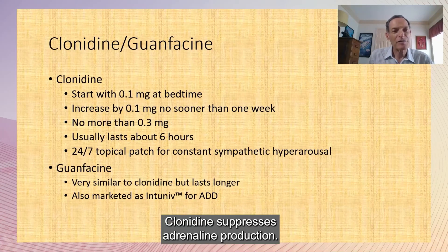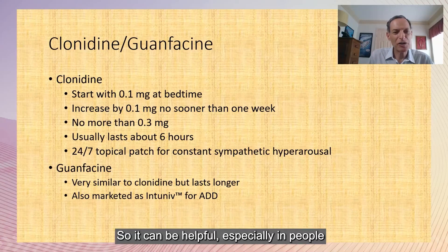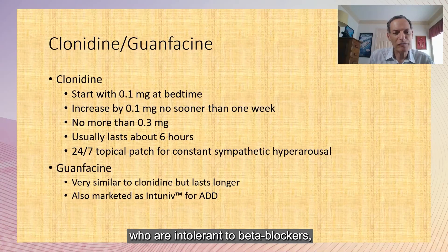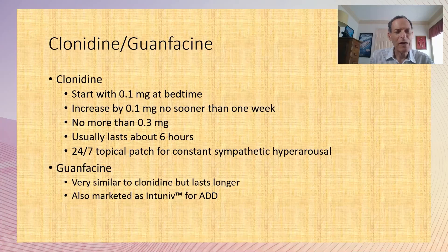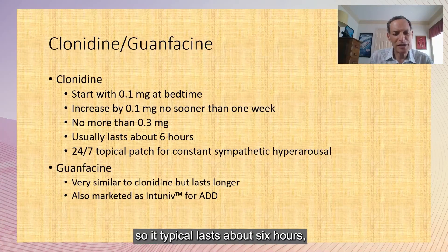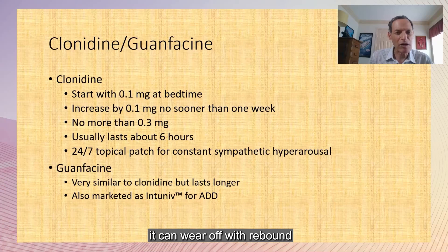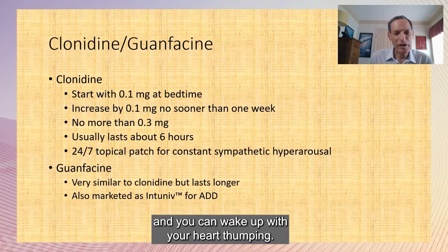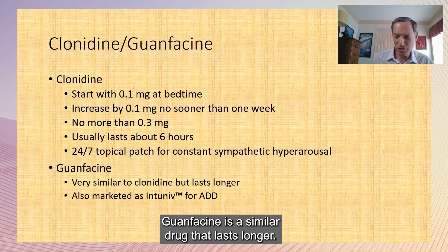Clonidine suppresses adrenaline production and can be helpful, especially in people intolerant to beta blockers, such as those with asthma. The problem is it lasts about six hours and when it wears off it can rebound, and you can wake up with your heart racing. Guanfacine is a similar drug that lasts longer.